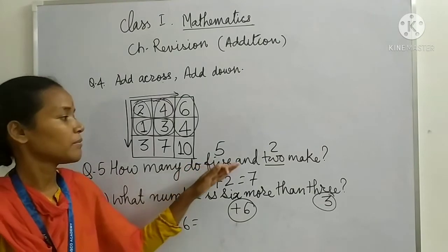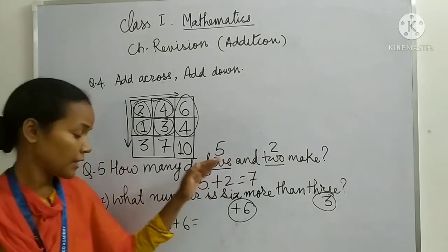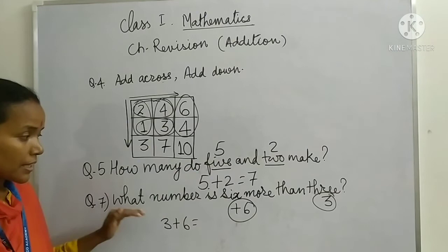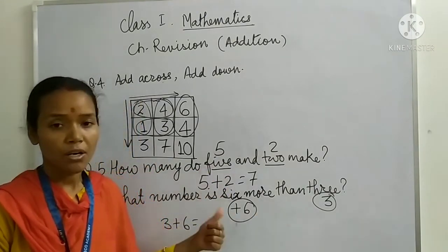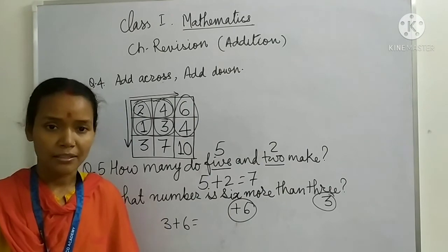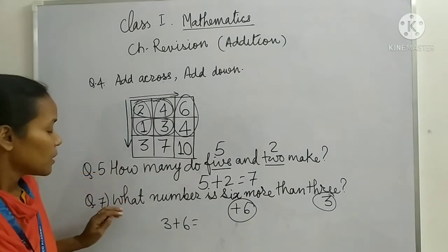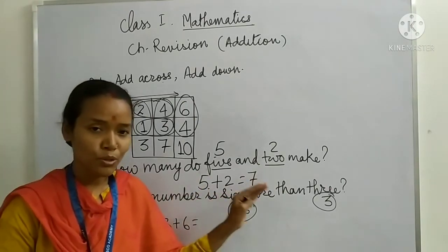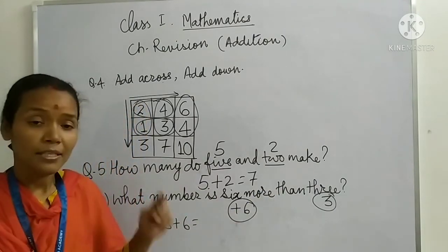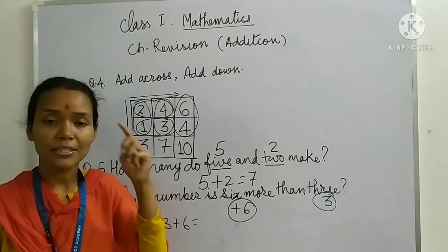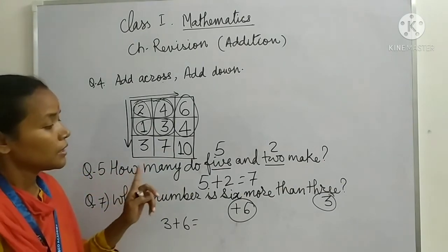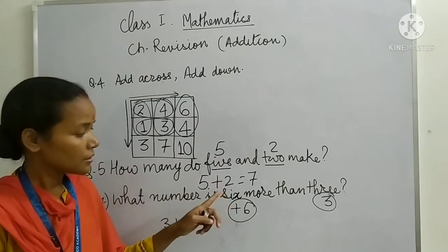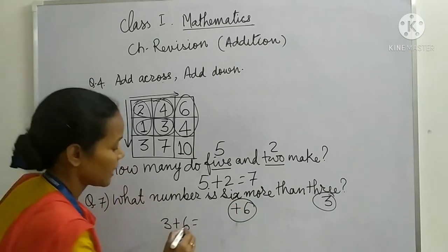Like question number 5, how many do 5 and 2 make? 5 or 2 milker kya banate hain? Question number 7 is asking ki 3 mein agar 6 jada kardate hain to kya aega? So the number 6 more than 3 is 3 plus 6. 6 in mind, 3 in fingers. 6, 7, 8, 9. So the number 6 more than 3 is 9.